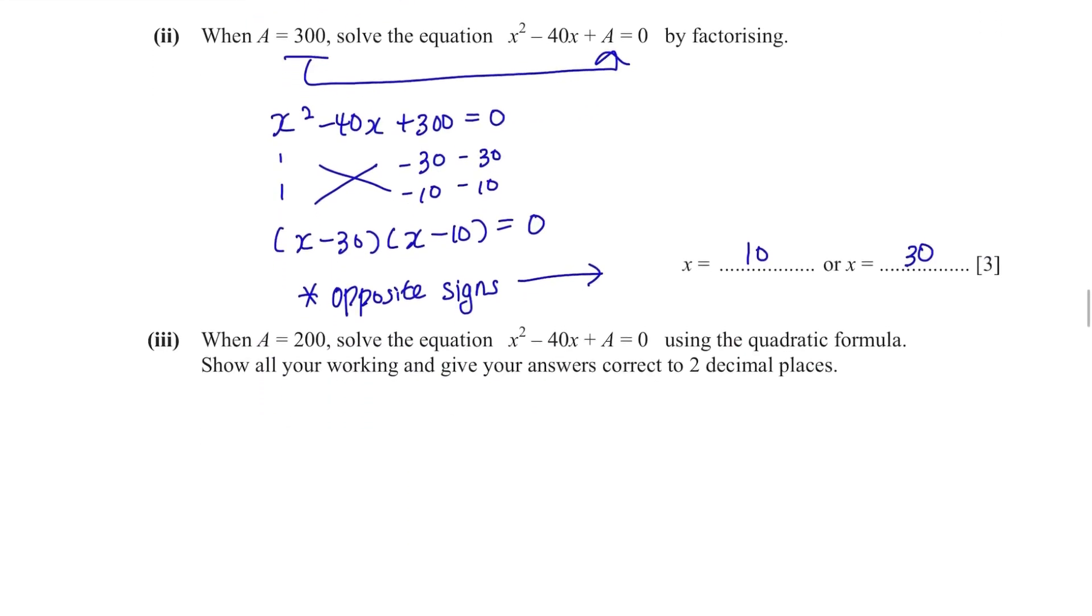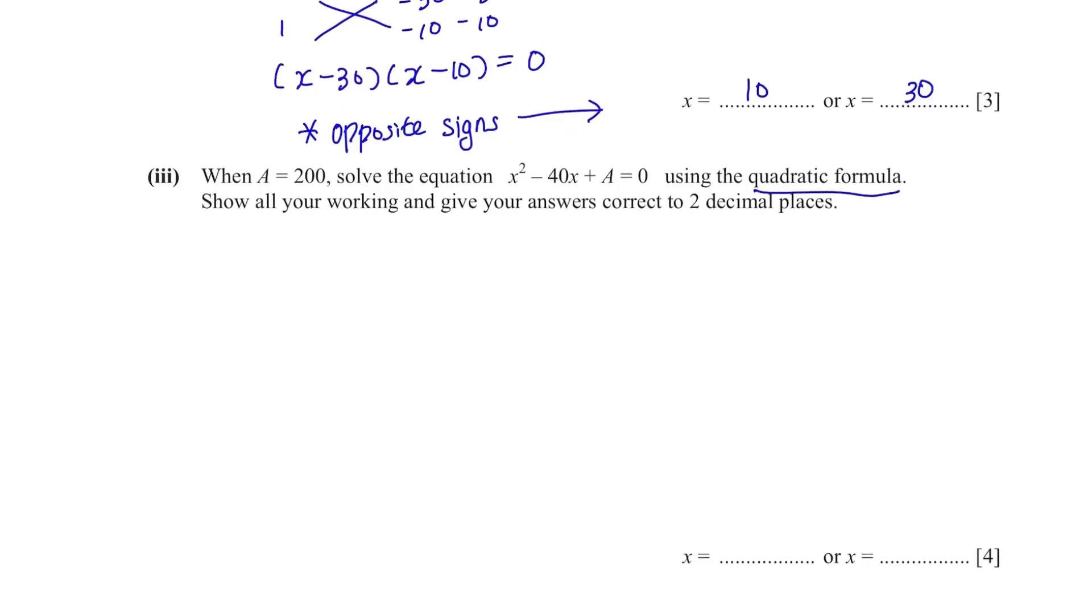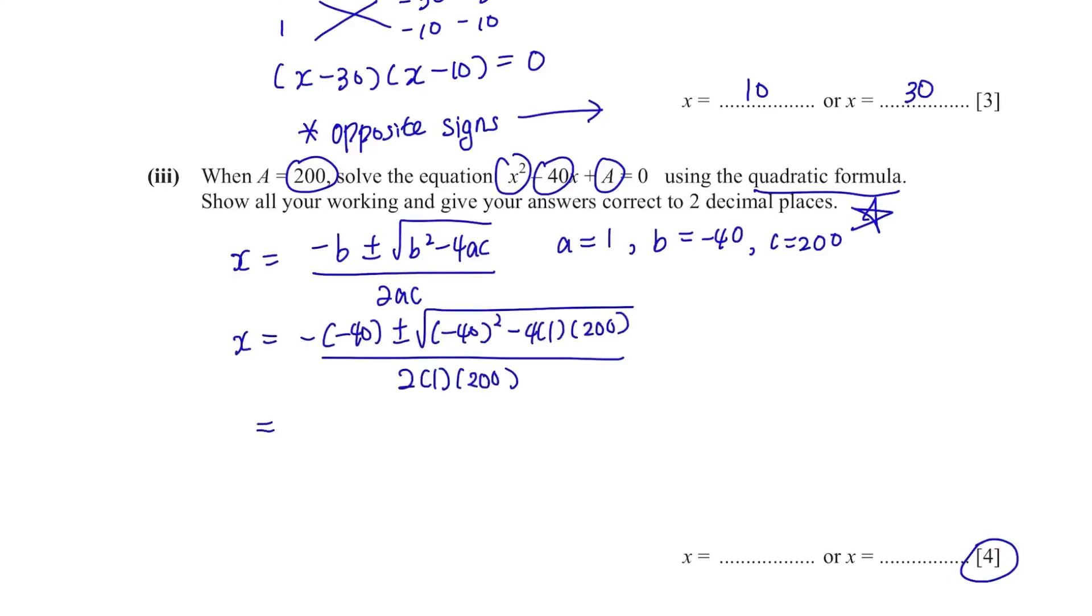When a equals to 200, solve the equation using the quadratic formula. Show all your working and give your answers correct to two decimal places. Since they said use the quadratic formula, we have to show all the steps. First of all, quadratic formula. You need to memorize this. a is 1, b is minus 40, and c is 200. Substitute these into the formula and you will get x. Don't simplify straight away with your calculator but show some steps. And this is the answer.